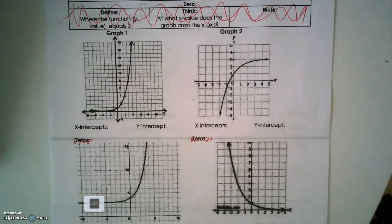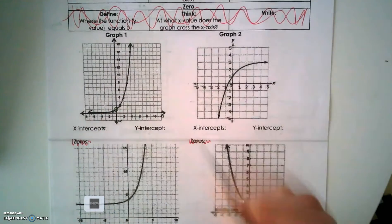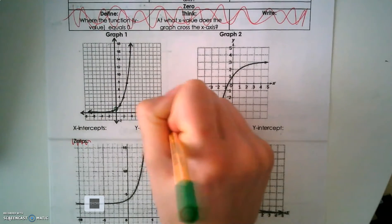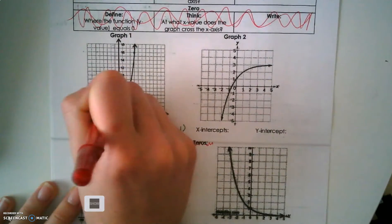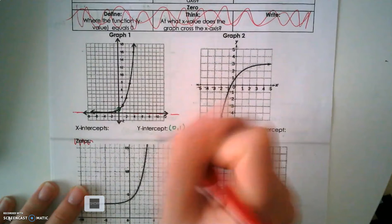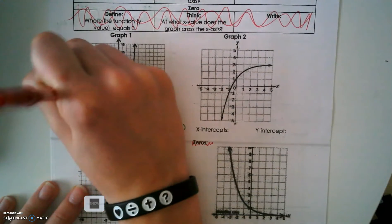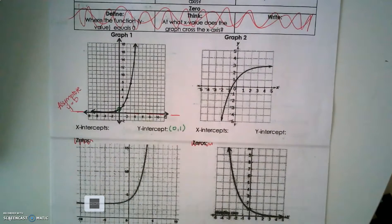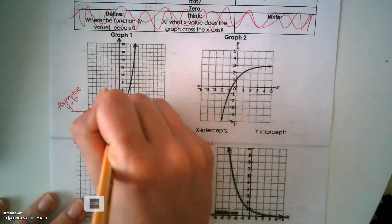Let's look at the y intercept first — that's where it crosses the y axis. So that's at the ordered pair (0, 1). But if we look for an x intercept, you should notice there's an asymptote. If there's an asymptote at y equals zero, my graph will never cross the x axis, so there's no x intercept.